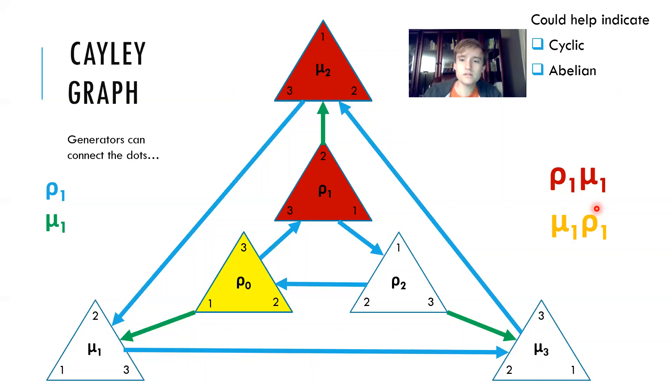If it was abelian, this would be equal to mu one rho one. However, if we use the Cayley graph, we can see that when we do mu one, we end up at this first triangle mu one, and then we perform rho one, the rho one operation along this blue line, we end up at mu three. Therefore, we can see that this graph demonstrates that the group is not abelian.